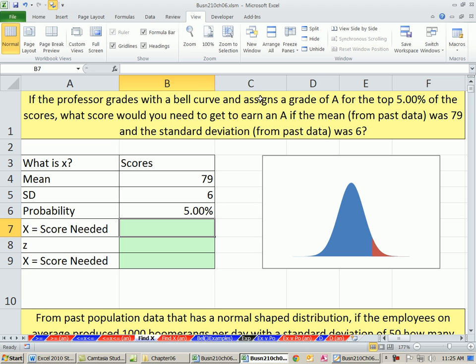If a professor grades with a bell curve and assigns a grade of A for the top 5% of the scores, what score would you need to earn an A if the mean from past data was 79 and the standard deviation was 6?